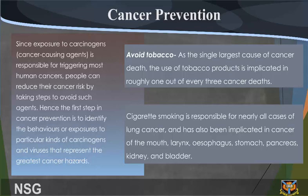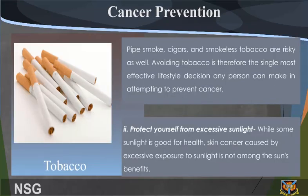1. Avoid Tobacco. As the single largest cause of cancer death, the use of tobacco products is implicated in roughly one out of every three cancer deaths. Cigarette smoking is responsible for nearly all cases of lung cancer and has also been implicated in cancer of the mouth, larynx, oesophagus, stomach, pancreas, kidney, and bladder. Pipe smoke, cigars, and smokeless tobacco are risky as well. Avoiding tobacco is therefore the single most effective lifestyle decision any person can make in attempting to prevent cancer.